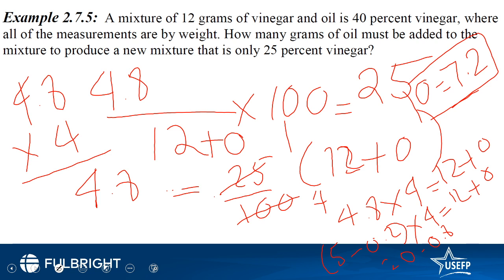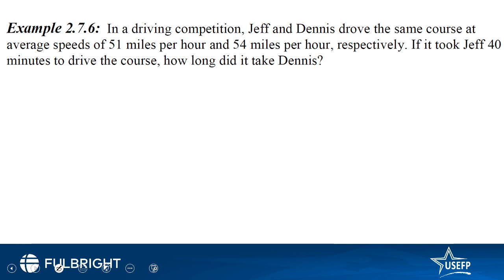Next question: In a driving competition Jeff and Dennis drove the same course at average speed of 51 miles per hour and 54 miles per hour. If it took Jeff 40 minutes to drive the course, how long did it take Dennis? So they drove the same course at different speeds. Let's assume that the length of the course is x miles. So x divided by 51 is what took Jeff and x over 54 is what Dennis took.